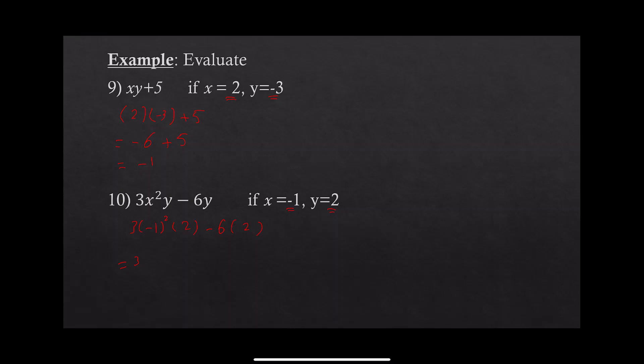Negative 1 squared — the exponent is even — equals 1. So 3 times 1 times 2 is 6. Then minus 6 times positive 2: minus times positive is negative, and 6 times 2 is 12. So 6 minus 12 equals negative 6.